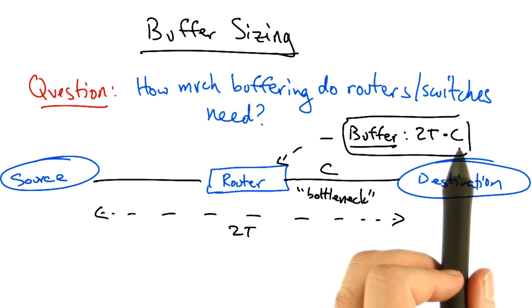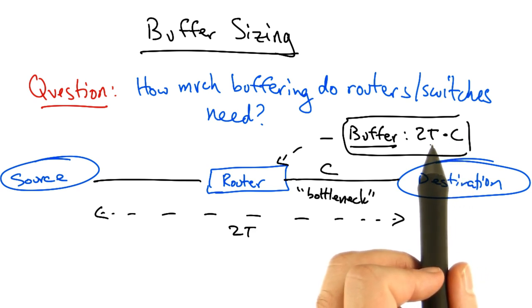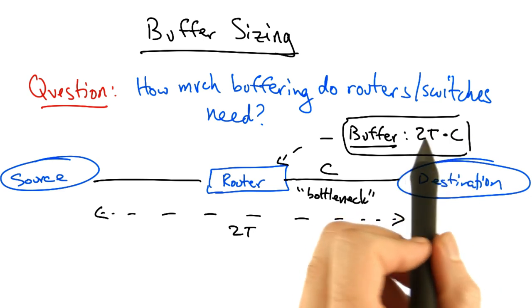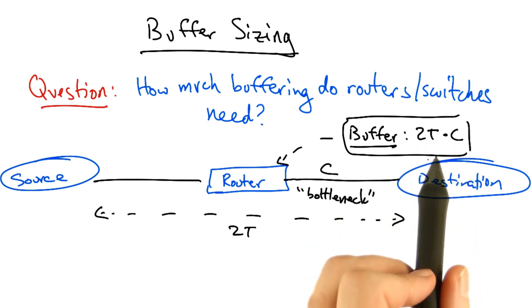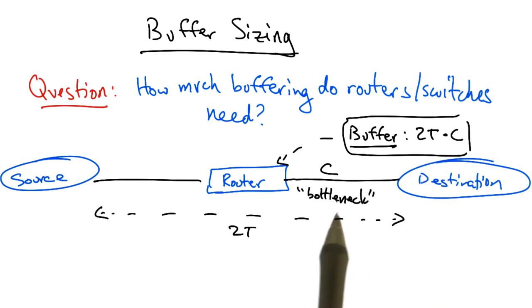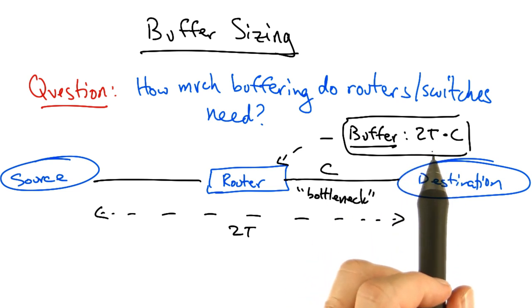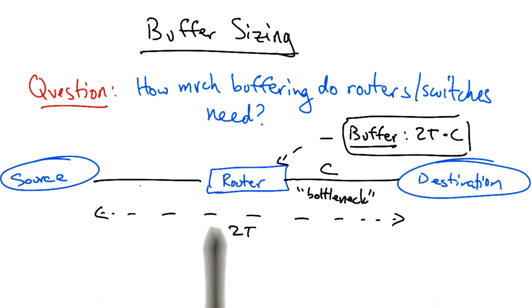C is the capacity of the bottleneck link in, say, bits per second, and T is a time of unit second. So this works out to bits, and the meaning of this quantity is simply the number of bits that could be outstanding along this path at any given time. It effectively represents the maximum amount of outstanding data that could be on this path between the source and destination at any time.